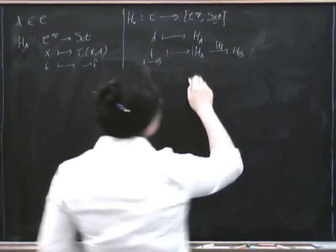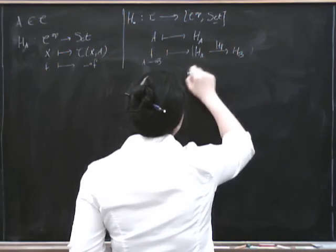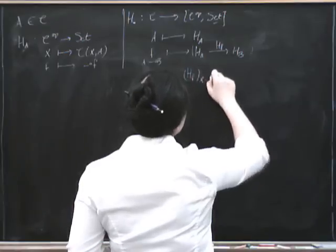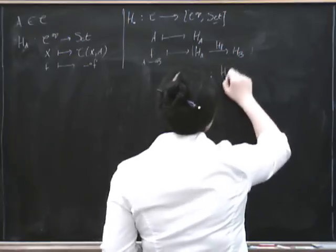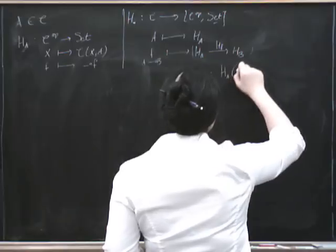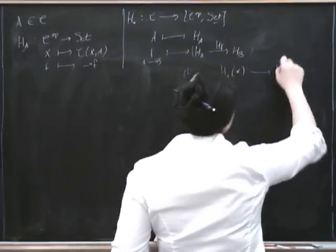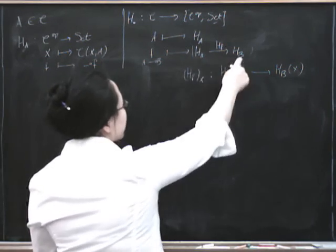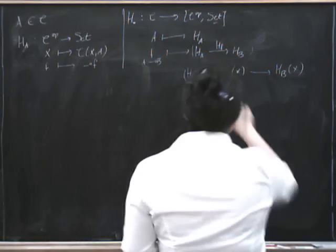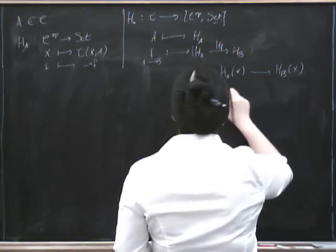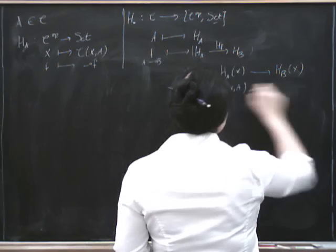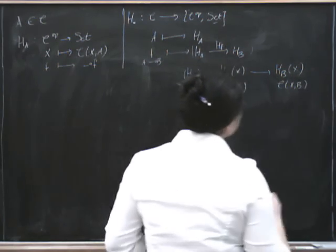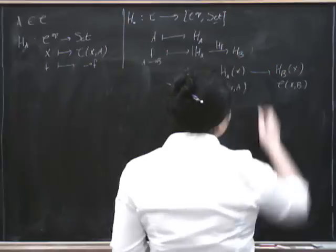What's its component? Well, a component of this has to go, we've got to have a component of H sub F at X, and it's got to go from H sub A of X to H sub B of X, because this is a natural transformation from H sub A to H sub B. This is the morphisms from X to A, this is the morphisms from X to B, and so what this is is post-composition by F.